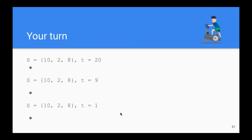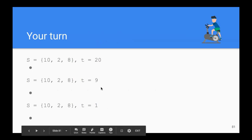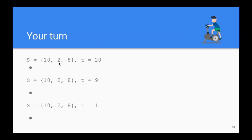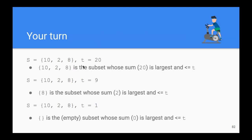Now it's your turn. What if we add another element, another number to S, the set, but we keep the same targets? What are the subsets that would satisfy the requirement? Pause the video and try to figure this out. Here are the answers. For the target 20, we can include all the items because that adds up to 20, which is exactly the target.